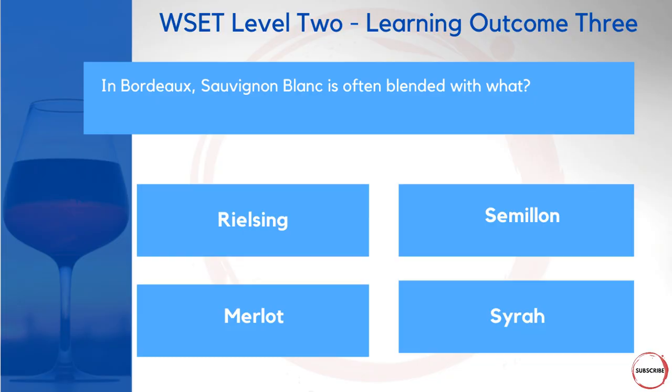Finally under assessment criteria three, a question about blending. In Bordeaux, Sauvignon Blanc is often blended with what? Is it Riesling, Semillon, Merlot, or Syrah? You'll learn this through the course book — in Bordeaux, Sauvignon Blanc is blended with Semillon.